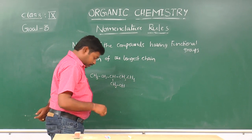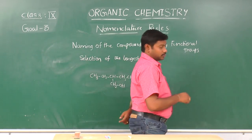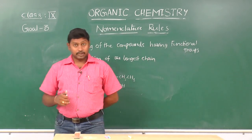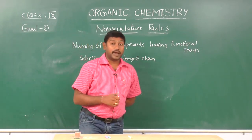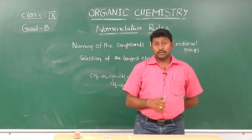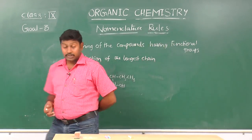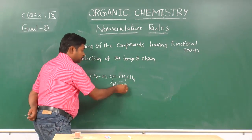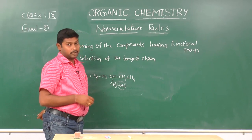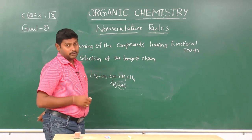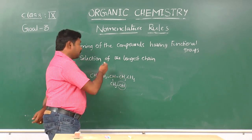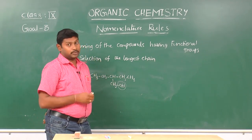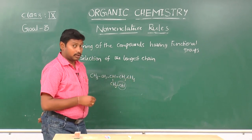In this example, first we should select the longest continuous carbon chain, including the maximum number of functional groups, if a functional group is present in the compound. Here, OH is the functional group present — that is alcohol. So based on this rule, we should select the longest continuous carbon chain to include the functional group, which is OH or alcohol.